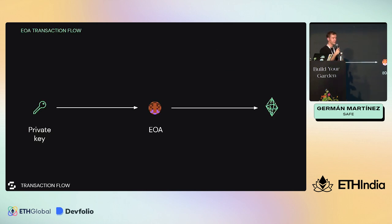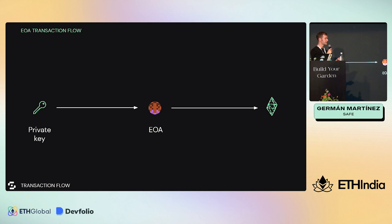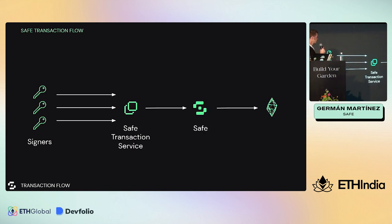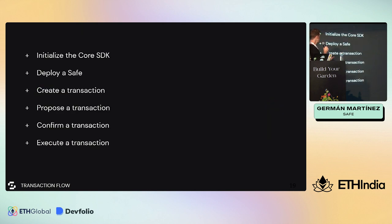Let's see how the transaction flow looks and how it differs from externally owned accounts. For an EOA, the flow is simple: you have an account with a private key that gives you access to everything. However, the Safe is a smart contract whose main functionality is being a multi-signature wallet. We need a couple of signatures together to approve the transactions we want to execute, reaching a threshold we define - for example, two out of three signers must approve every transaction. We can use the Safe Transaction Service to collect signatures off-chain to save gas.